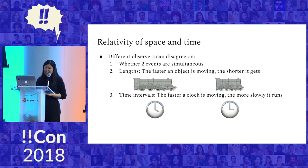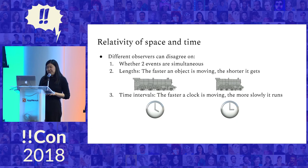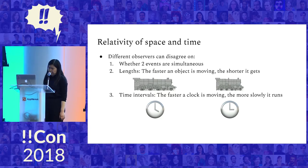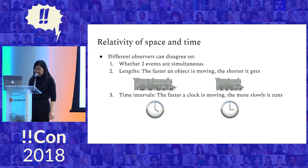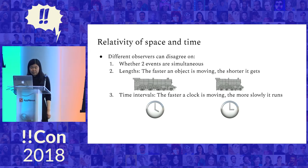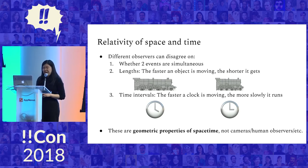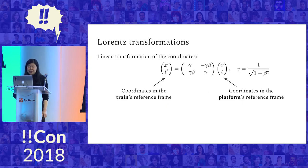More generally, different observers can actually disagree on various things about space and time. First, as we've seen, they can disagree on whether two events are simultaneous. Different observers can also disagree on the length of objects — the faster an object is moving, the shorter it gets. In your reference frame the train is a certain length; in your friend's reference frame from which the train is moving, it's actually going to be shorter. Time intervals can also be disagreed on — the faster a clock is moving, the more slowly it runs. One important thing to note is that these are actually geometric properties of space-time, nothing to do with cameras or human observers.